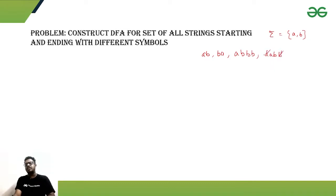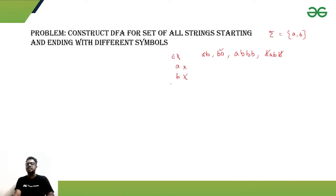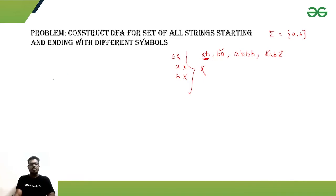If the string is starting with 'a', it should end with 'b'. If the string starts with 'b', it should end with 'a'. We won't accept null or length-one strings, because length-one strings start and end with the same symbol — that's not different. So the smallest accepted strings will be 'ab' or 'ba'.